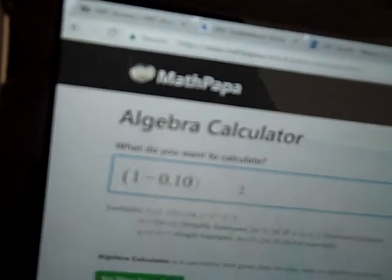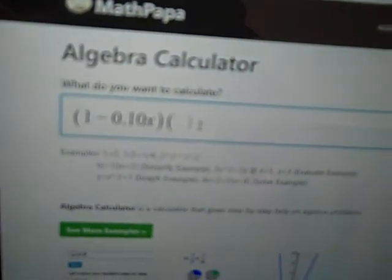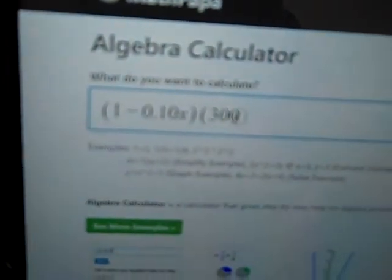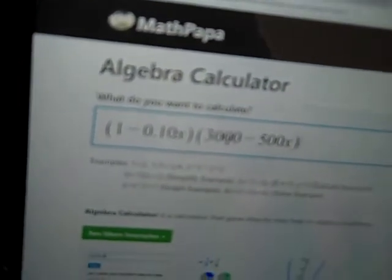0.10 with x, close it, and then you don't need to even hit times, you just put the parentheses next to it. 3,000 plus 500x, so 3,000 minus 500x, close that. And I get negative 50, I get, sorry I messed it up. This was plus, sorry.